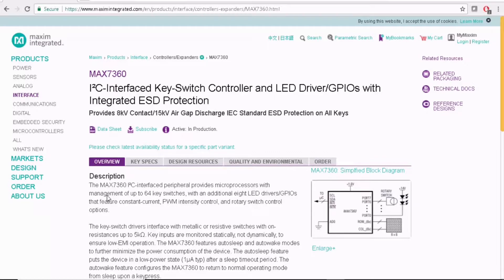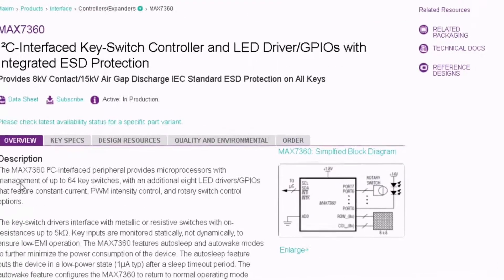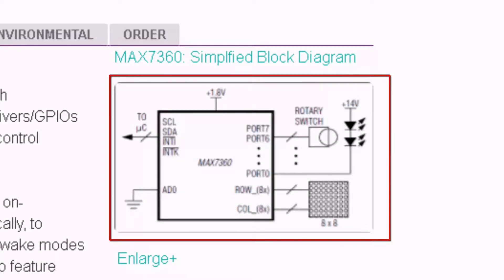MAX7360 is an I2C interfaced key switch controller which can manage up to 64 switches and a rotary encoder and communicates to microcontroller through I2C interface.